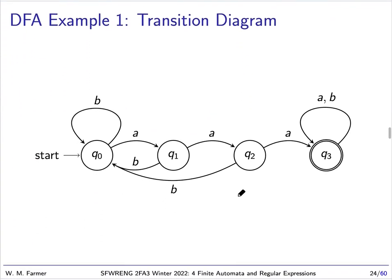Here is the transition diagram — the same information in visual form. We have four states: q0, q1, q2, q3. The start state is marked with an arrow, and the final state has concentric double circles. Every state has two transitions, an a-transition and a b-transition. From q0, reading an a we go to q1; reading a b we stay in q0, and so forth.